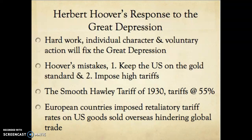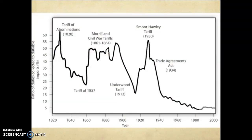So instead of making the Depression better, Hoover's actions actually made it worse. With the Smoot-Hawley Tariff at around 55%, for every dollar you spent on an item made overseas — particularly in Europe — you had to pay an additional 55 cents in tax. Of course, you're not going to buy a European product that costs 55 cents more when you could get the same product made in the US for cheaper.